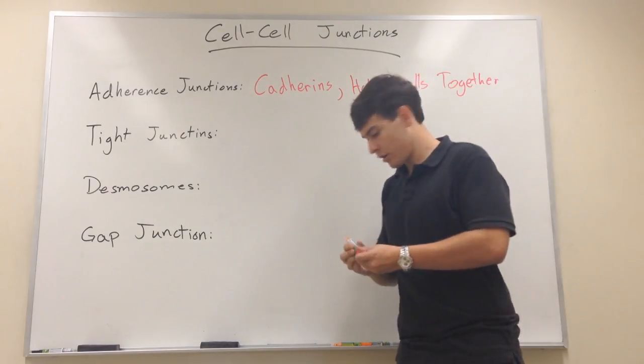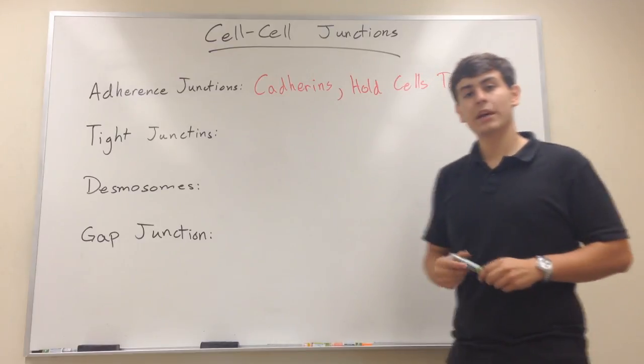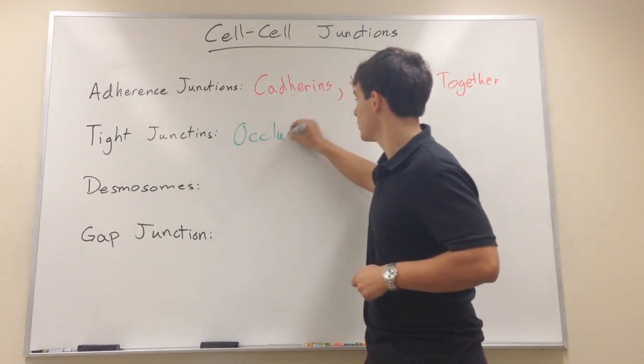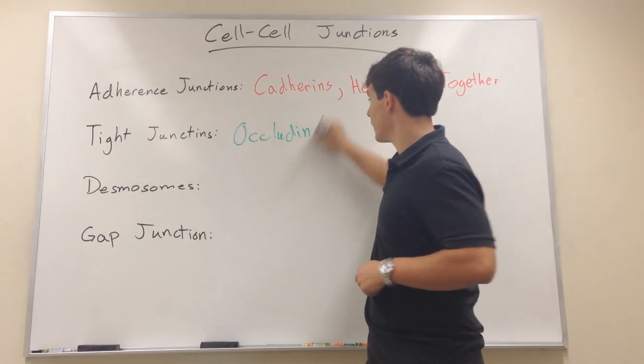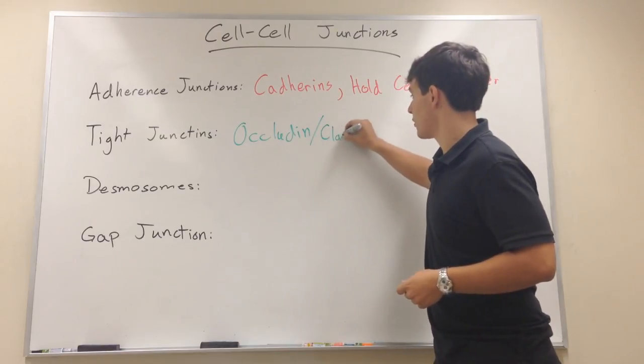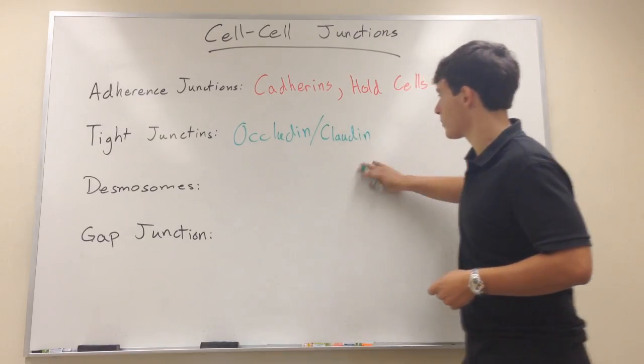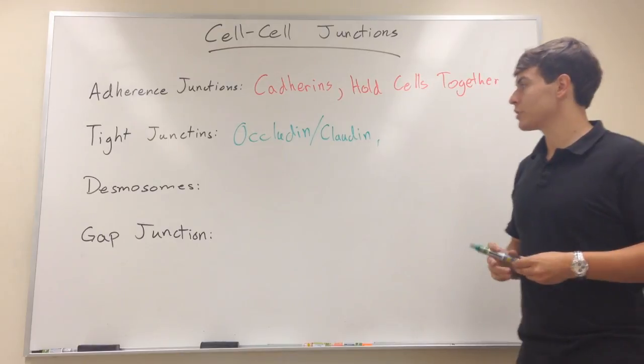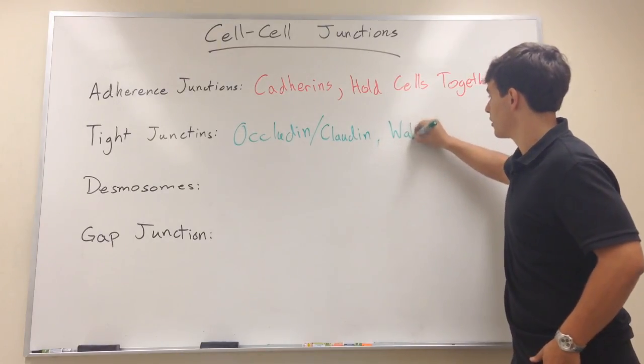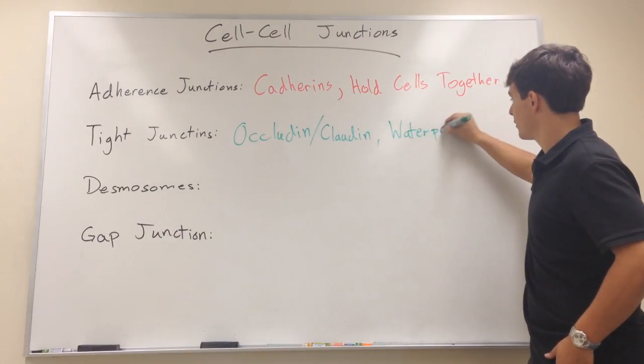Tight junctions were the ones that were originally thought to be comprised of occludin, but then later found out that there is a lot more other stuff involved and that maybe one of the other ones is claudin. But basically tight junctions help to waterproof, I think is the good way to put it, waterproof cells.